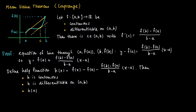Now look at what happens when we substitute the value a. We get h(a) equals f(a) minus f(a) minus f(b) minus f(a) divided by b minus a, times a minus a. There are many cancellations: f(a) against f(a), and of course a minus a equals 0, so h(a) equals 0.